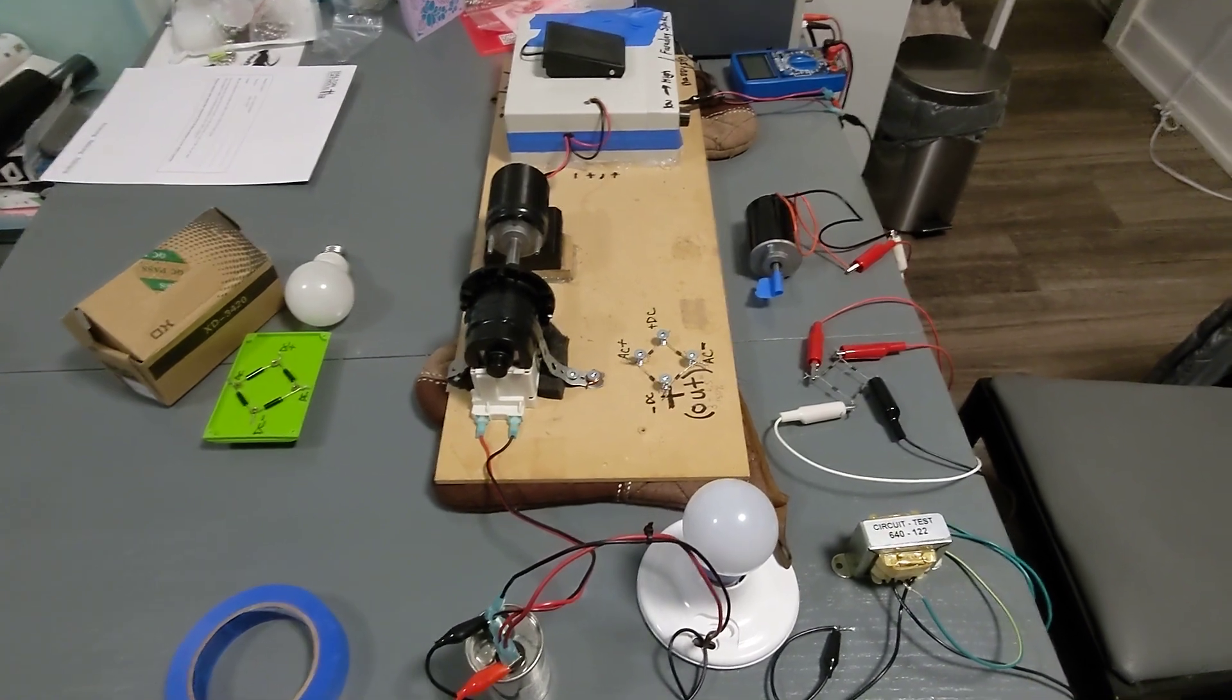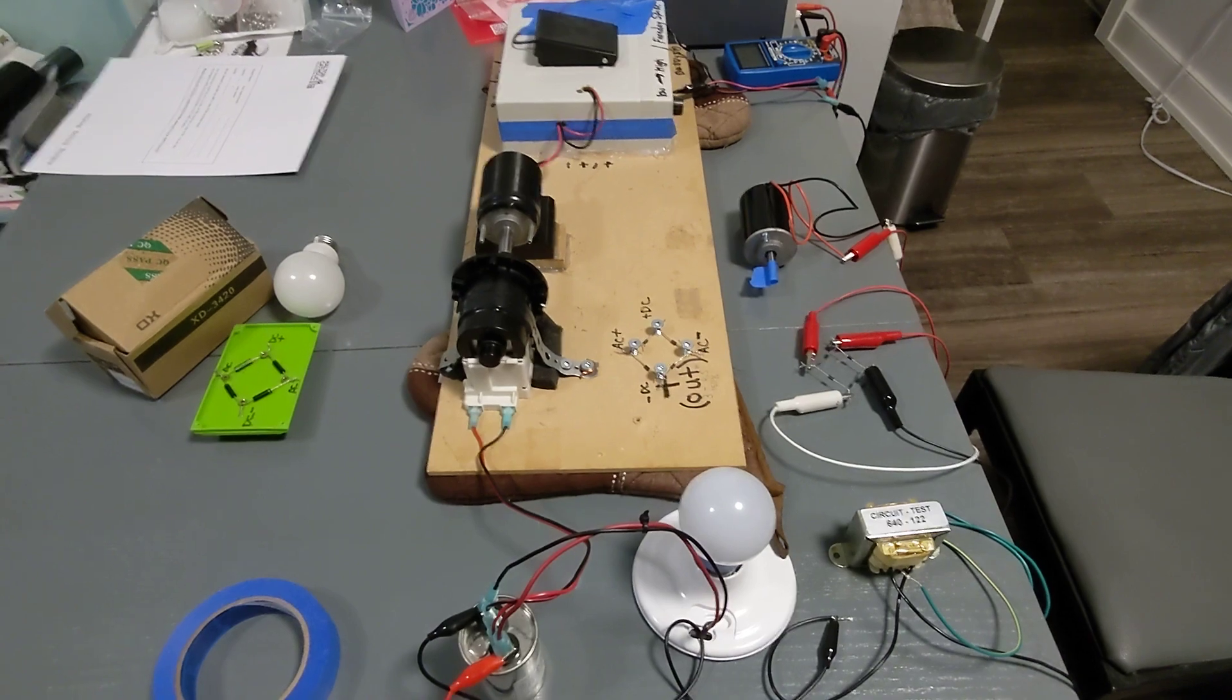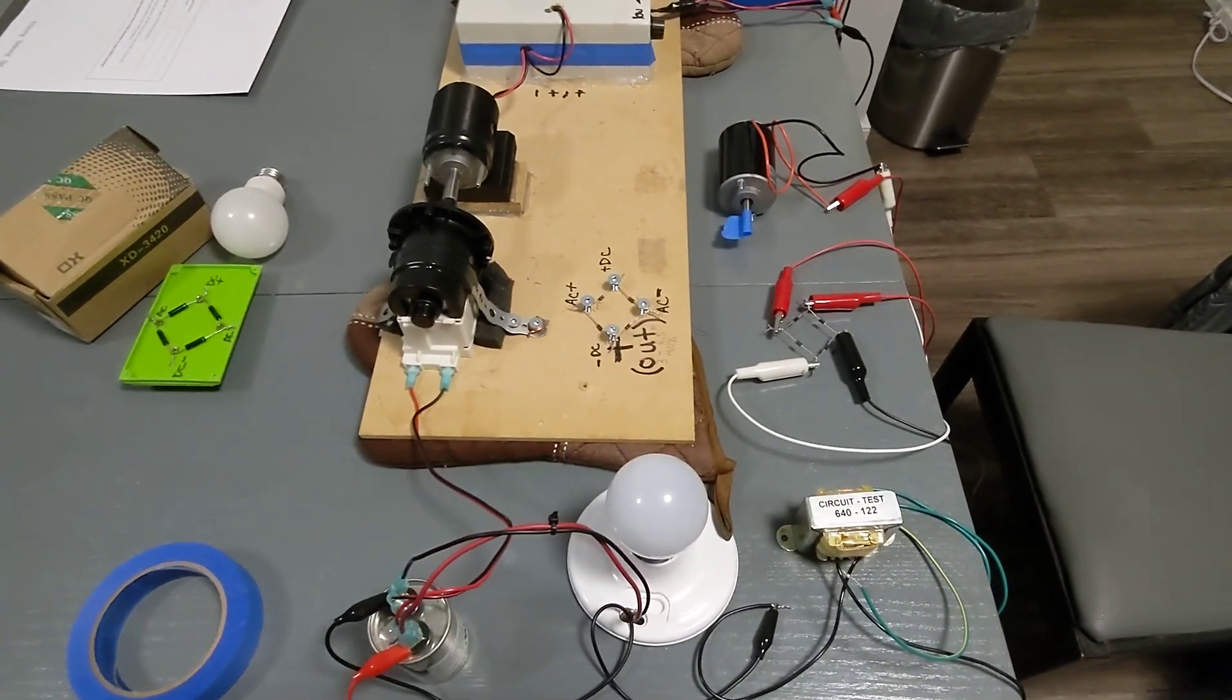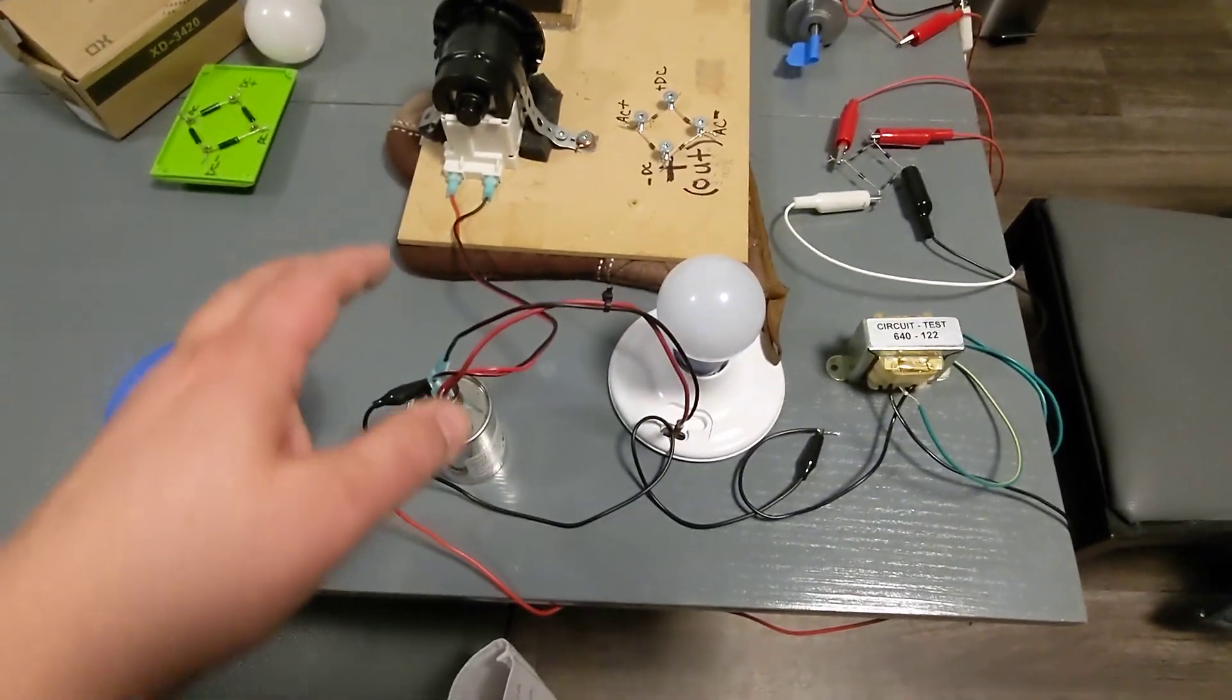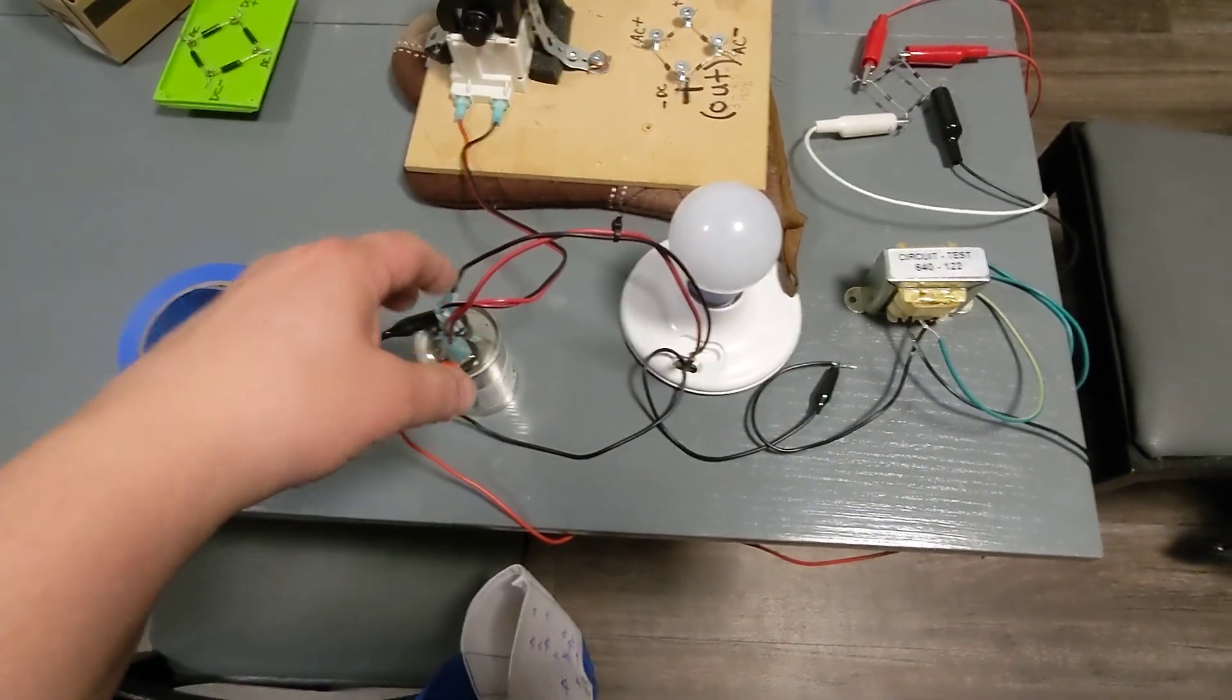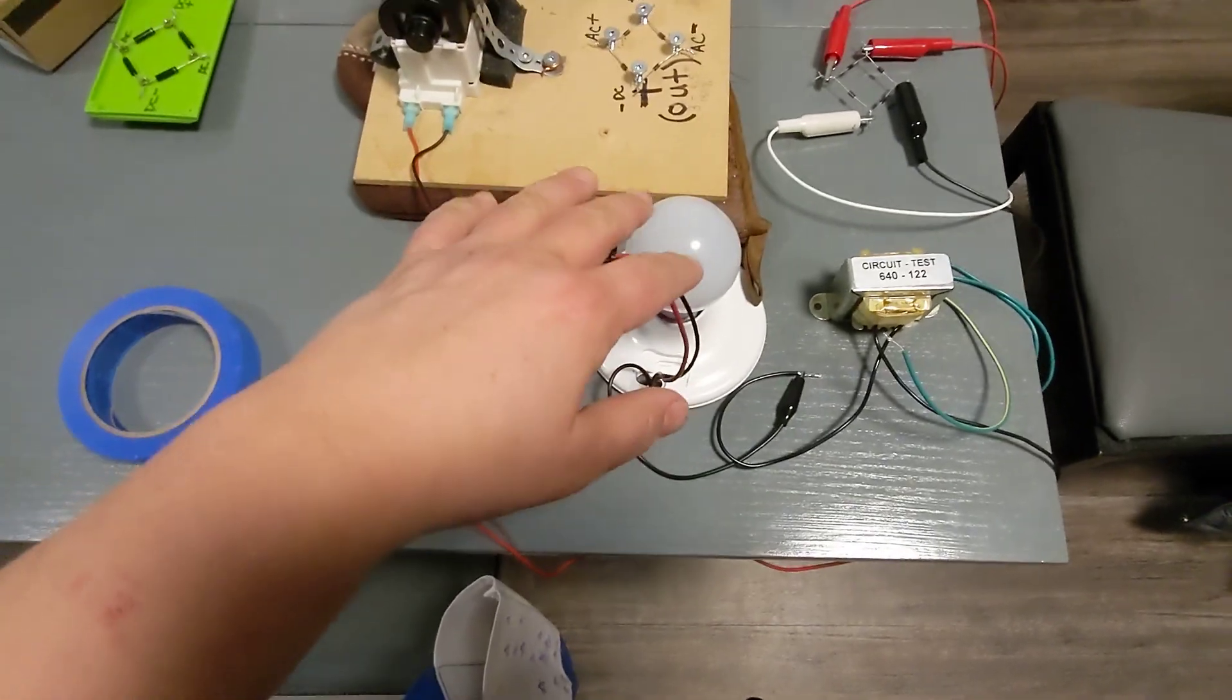So tonight I decided to tackle the Gerard Morin generator system. You've seen most of the system in my previous videos. What I decided to do is demonstrate how you can use a high voltage coming off at 115 volts and power a light bulb.